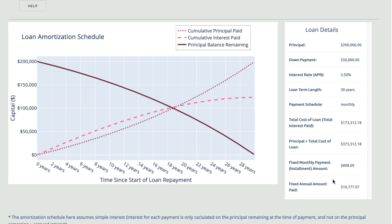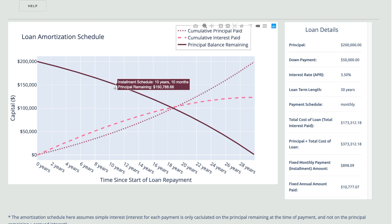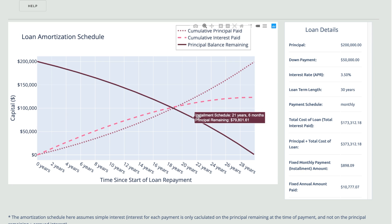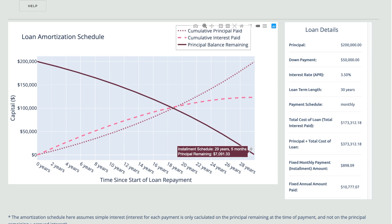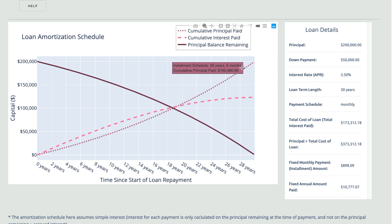Taking a look at the graph, if you hover over any of the lines present, a yearly breakdown will pop up, showing you the balance, interest paid, and principal paid over time.